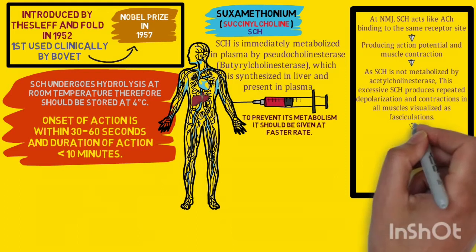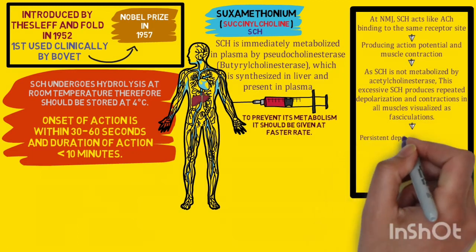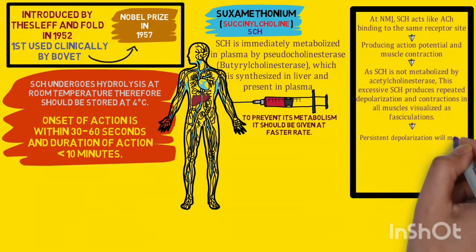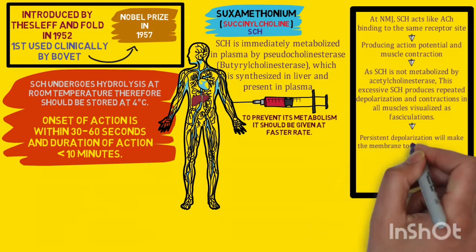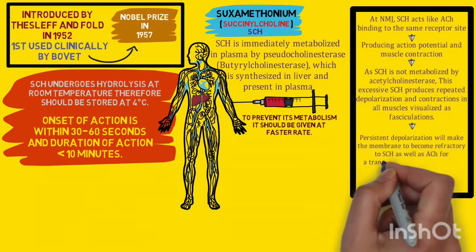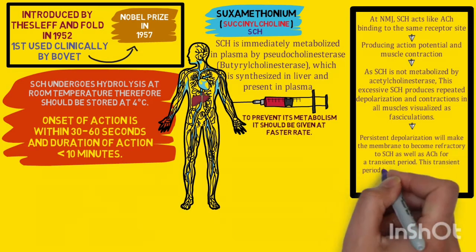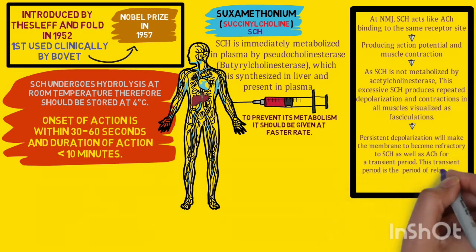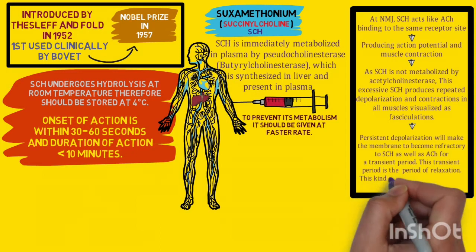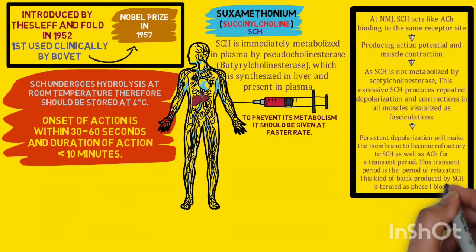This excessive succinylcholine produces repeated depolarization and contractions in all muscles, which can be seen as fasciculations. As a rule of physiology, persistent depolarization will make the membrane go refractory to succinylcholine as well as acetylcholine for a transient period. This transient period is the period of relaxation, and this kind of block is termed as phase one block.